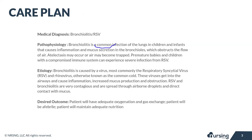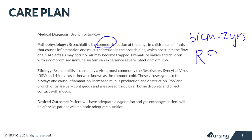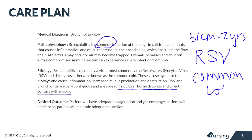Bronchiolitis is one of the most common infections of the lungs that we see in children and infants. The ages that we usually see this diagnosed are from birth to two years of age. The most common cause of bronchiolitis is a virus called respiratory syncytial virus or RSV. It is extremely contagious and it's spread through droplet and airborne transmission, so you need to pay attention to that when you're planning your infection control.